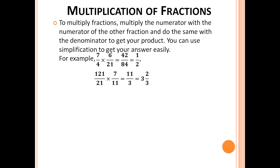For example, 7/4 times 6/21. We do 7 times 6 and 4 times 21, which is equal to 42/84, which we can simplify to get 1/2.